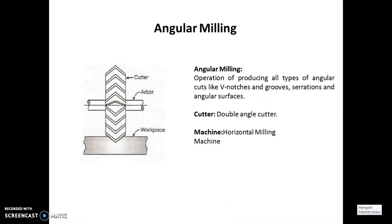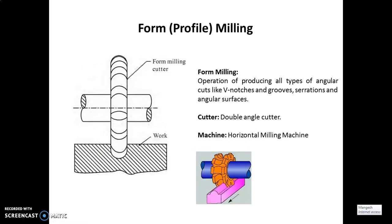Next is angular milling, as shown in this diagram. Single or double angle cutters are used to machine angles other than 90 degrees. Common cutters include 45-degree or 60-degree single angle cutters and 45-, 60-, and 90-degree double angle cutters. They find the widest application in tool production for milling chip flutes on various cutting tools. Horizontal milling machines are generally used for this operation.